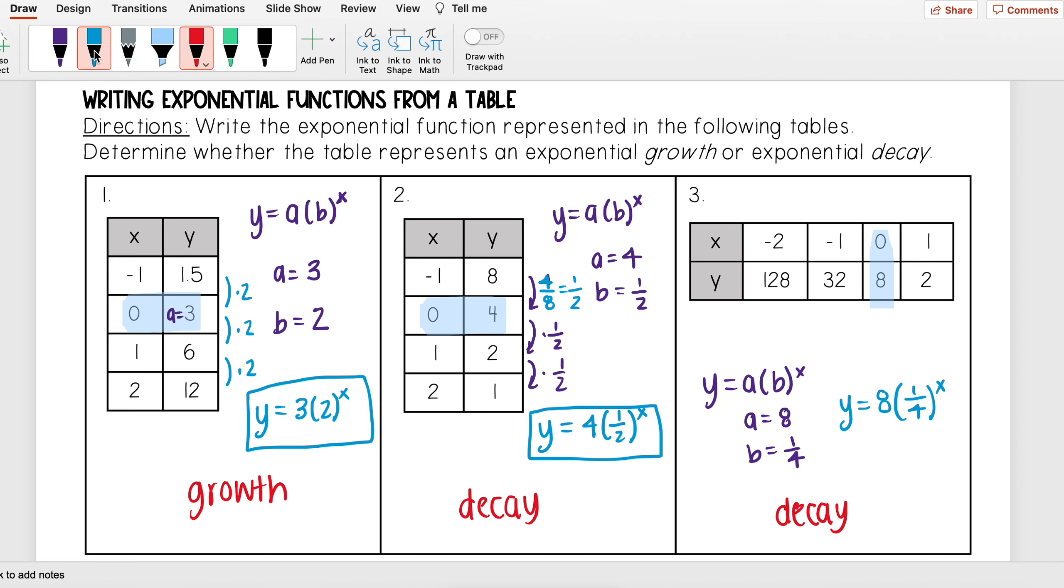The answer you should have gotten here was y equals eight times one fourth to the x, and this is decay because it's getting smaller. When I found my one fourth, you can go, 'How do I get from 128 to 32?' You're going to take that second number, 32, divided by the first number, 128.